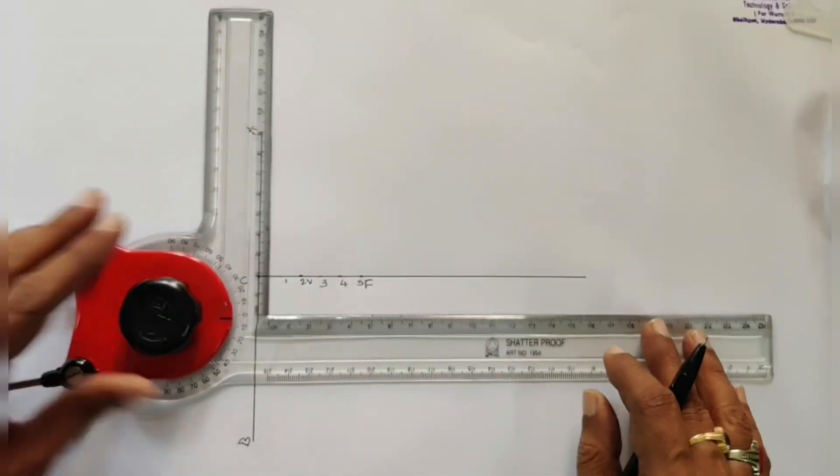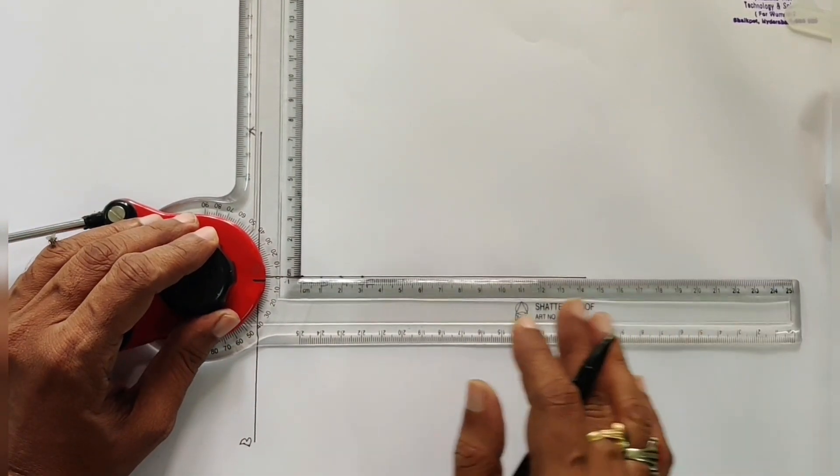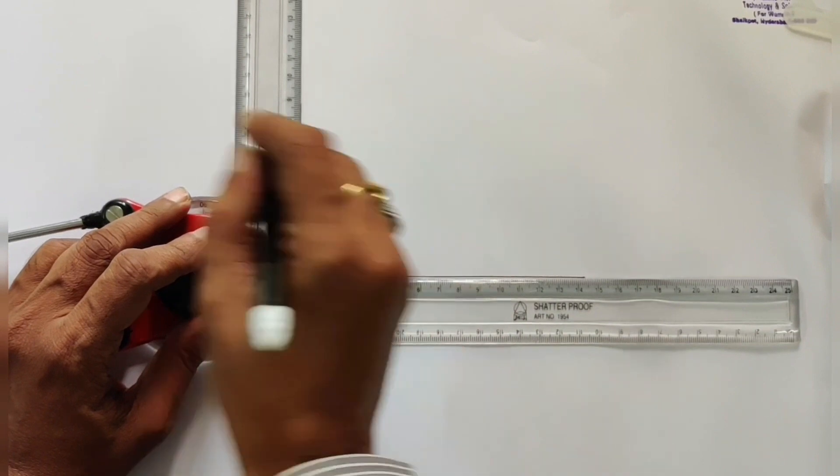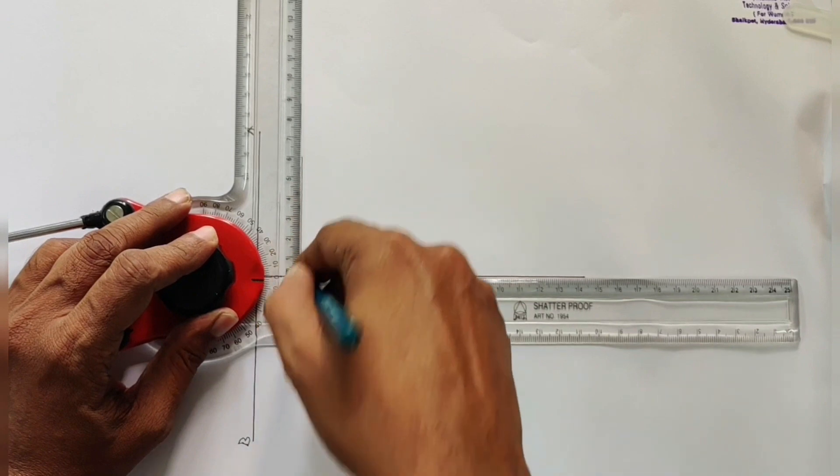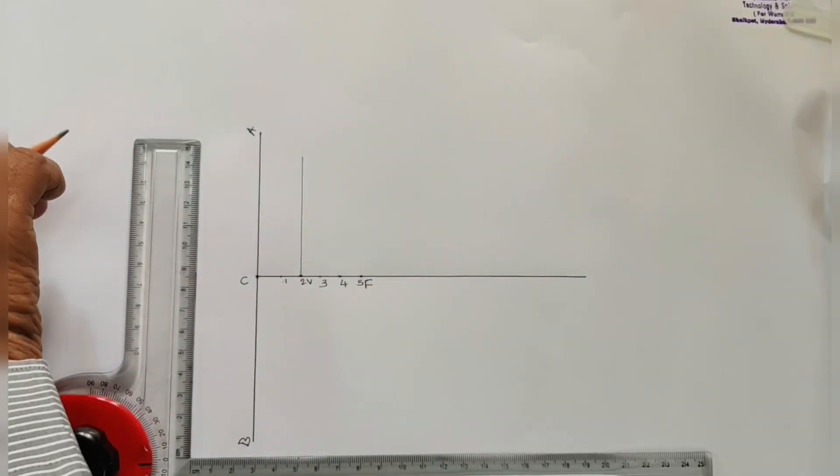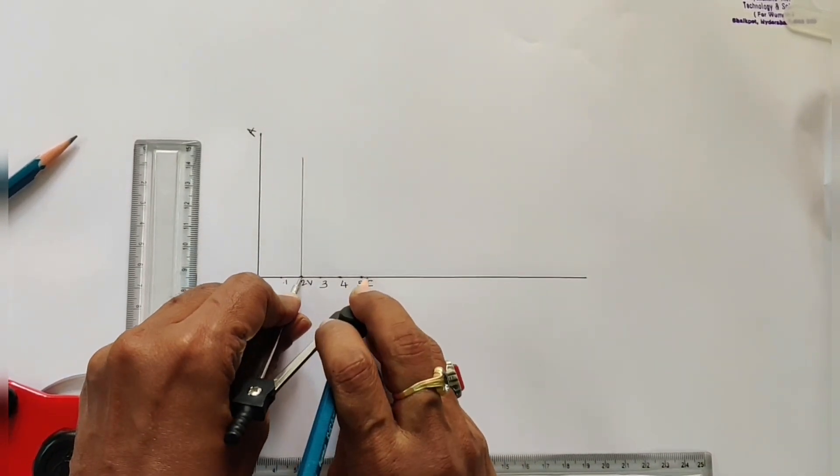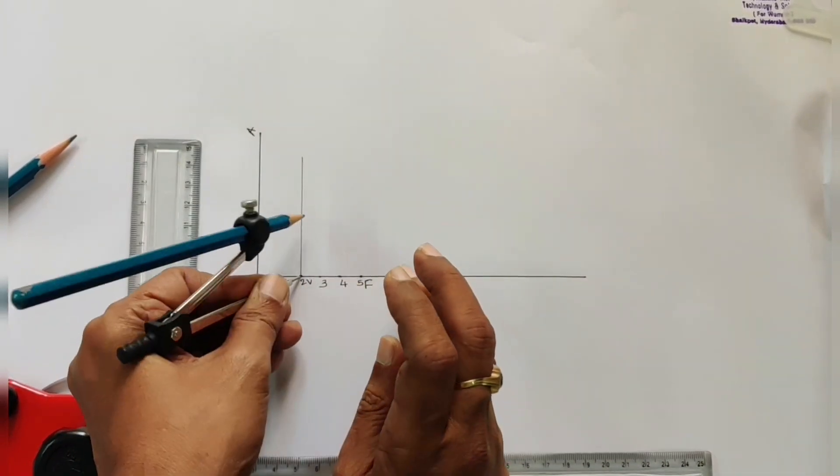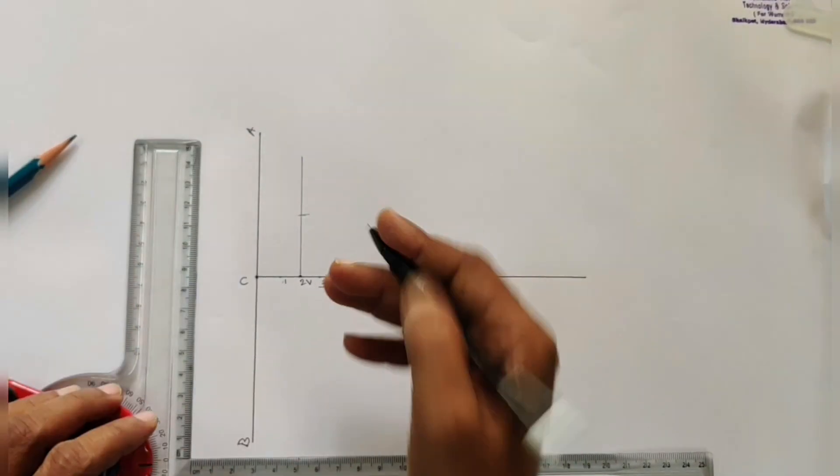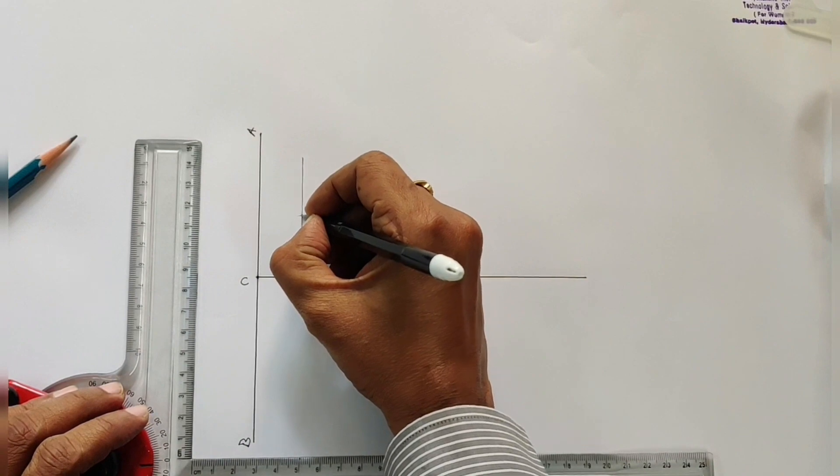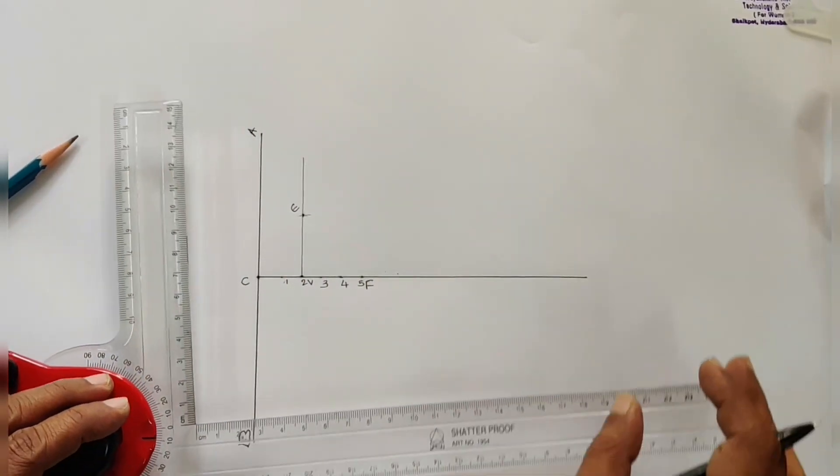Let vertex V drop perpendicular to the axis. With compass, VF as a radius, V as a center, draw an arc. Then join this point, say E with C, and extend CE.